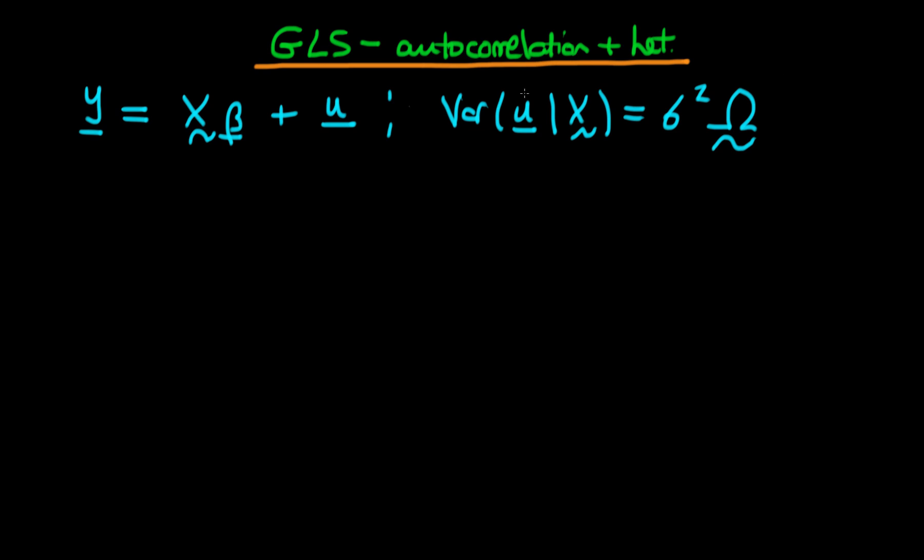Unlike before, we're not necessarily going to assume that omega is a diagonal matrix. We're going to assume that omega has the following structure: it has omega 1-1 as its first component, omega 2-2 as its second diagonal component, through to omega n-n as the last diagonal component.